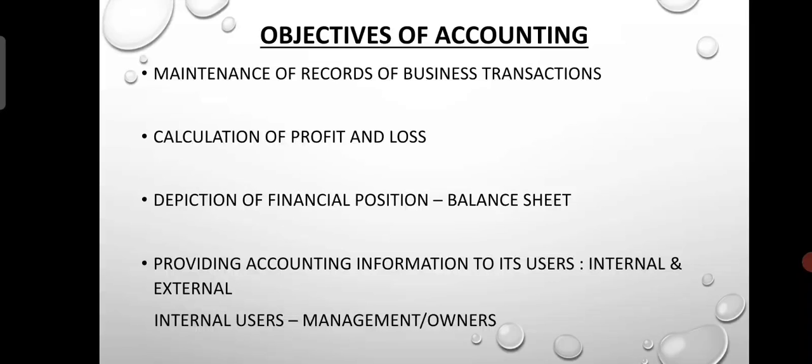The second objective is the Calculation of Profit and Loss. If we want to record the details of the business, we want to find the profit and loss for that period. So the Calculation of Profit and Loss is another objective of accounting.